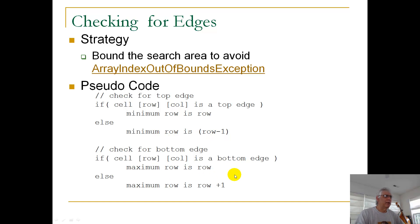So let's look at the bottom edge here. And this is really the same case, just we're looking for the bottom, not the top. So here, same sort of thing. If cell row col is a bottom edge, so if this evaluates, if this Boolean evaluates true.